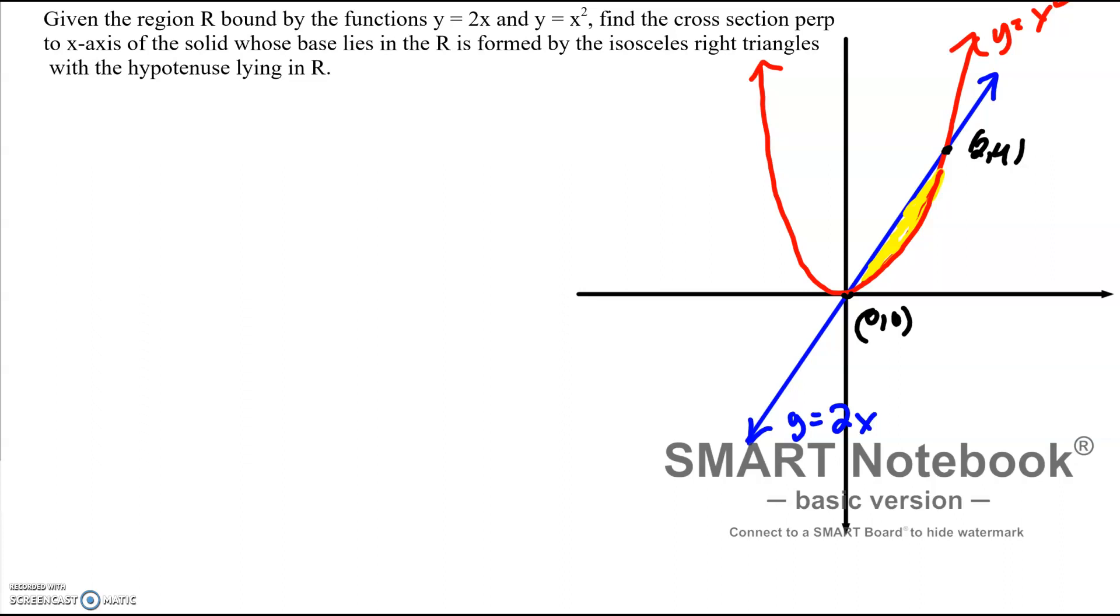Okay, this is the last of the greatest hits of cross-sections that are triangles. So this one's going to be an isosceles right triangle, but this time the hypotenuse is going to lie in this yellow region that I'm calling R. And we're going to have this perpendicular to the x-axis just to leave the equations as is.